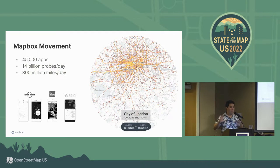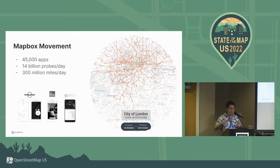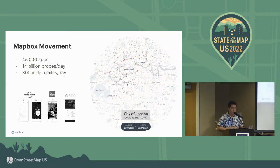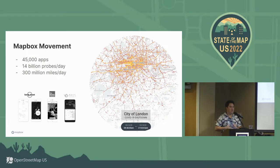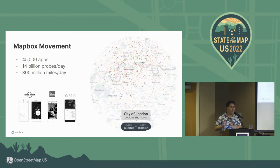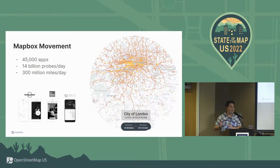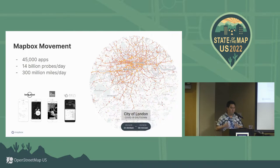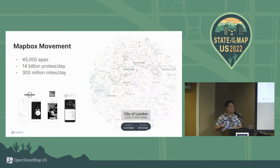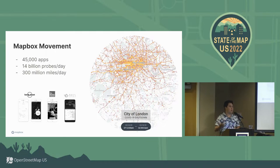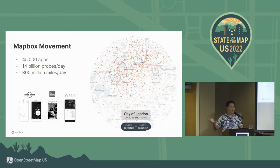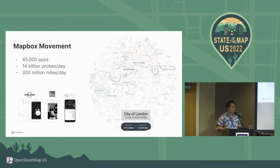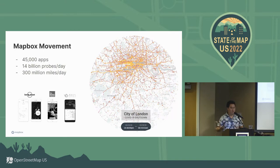Before we talk about that, I'll frame the product I've been working on for the past two years at Mapbox called Movement. Mapbox has an SDK used in many applications that generates anonymized probe data at essentially sub-five-minute intervals. You get these snippets of activity along the road. The reason for that is it highly anonymizes the data — you can't understand the totality of a trip. But it generates information that can be assigned to road segments to get speeds. Many providers that supply real-time speeds data generate their information this way.